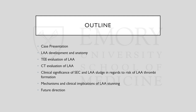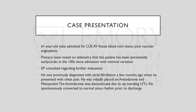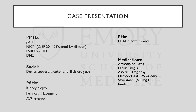Our case starts with a 61-year-old male, admitted for left upper extremity AV fistula bleed, now status post vascular angioplasty. The primary team noted on telemetry that since admission, the patient has been persistently tachycardic in the 100s with very minimal heart rate variation, and he was consulted regarding further evaluation. Looking at his chart, he was previously diagnosed with atrial fibrillation a few months ago when he presented with chest pain. He was initially started on amiodarone and metoprolol, and the amiodarone was discontinued due to uptrending LFTs. He was able to tolerate the beta blocker and spontaneously converted to normal sinus rhythm prior to discharge.